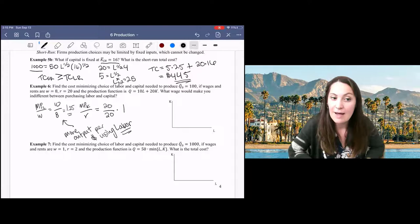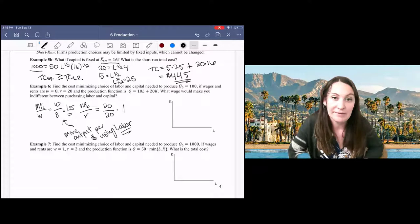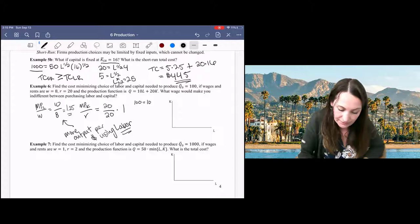And then we need to decide how much labor, and we can get that by looking at our production function. So we'd like to produce 100 units of output. So we are going to use 10 units of labor and zero units of capital.